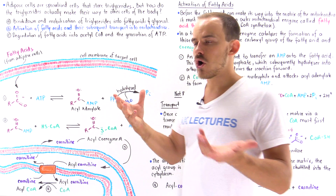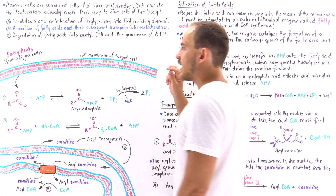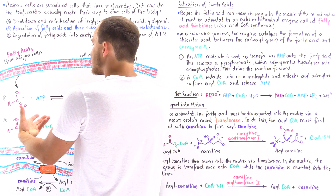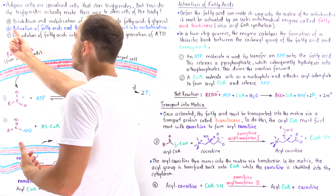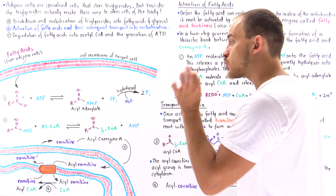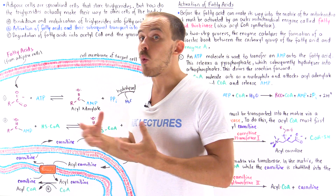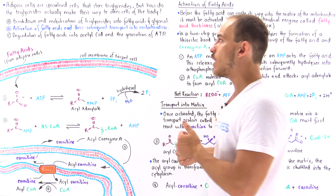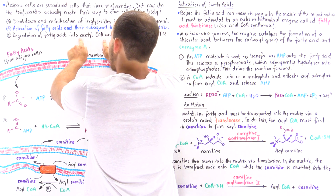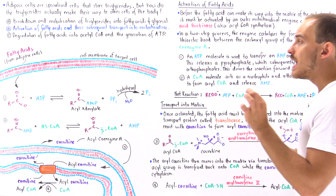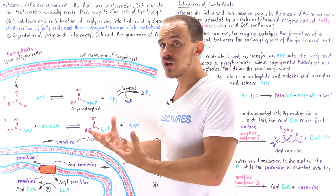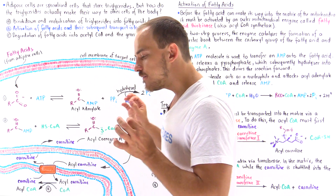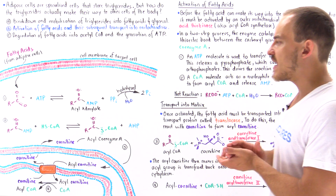Let's suppose we have a target cell, such as a muscle cell. In stage two, once the fatty acids are brought into the cytoplasm of that target cell, the cell needs to activate the fatty acids and then transport them into the matrix of the mitochondria. In stage three, within the matrix, those fatty acids are broken down into acetyl coenzyme A molecules, which are fed into the citric acid cycle to generate ATP. In this lecture, we focus on stage two: the activation of fatty acids and their subsequent transport into the mitochondrial matrix.